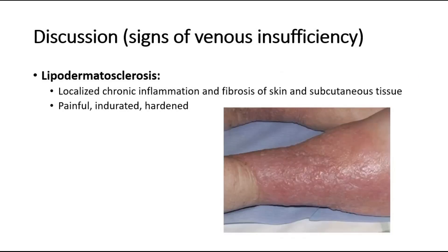Lipodermatosclerosis is defined as localized chronic inflammation and fibrosis of the skin and subcutaneous tissue. It is usually painful, indurated, and hardened. This picture shows lipodermatosclerosis at the lower leg.